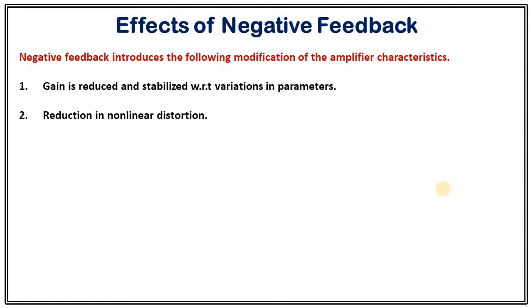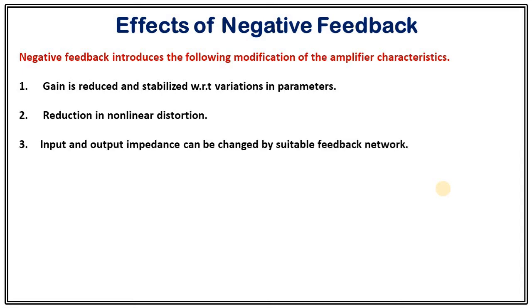The second modification is reduction in non-linear distortion. We know that any non-linear component in the circuit can produce non-linear distortion in the output, and the use of negative feedback can reduce that kind of non-linear distortion. We can also change the input and output impedance by using a suitable feedback network, controlling it with different kinds of feedback networks and topologies to change these values to a desirable limit.